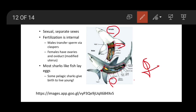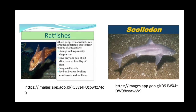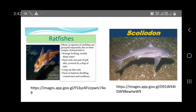Most sharks lay eggs, but some pelagic sharks — those living in the upper layer of water — give birth directly to live young. Rat fishes include about 30 species grouped separately due to their unique characteristics: strange-looking, mostly deep-water, with only one pair of gill slits covered by a flap of skin, a long rat-like tail, and they feed on bottom-dwelling crustaceans and mollusks. Scolidon is shown here as an example.